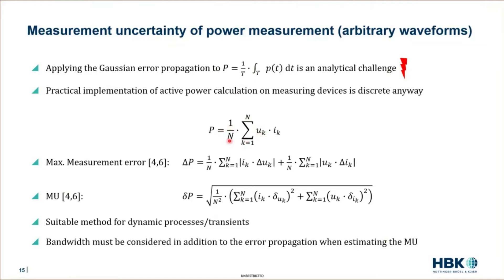Of course, n depends on the ratio of sample frequency to fundamental frequency if we link the averaging to the fundamental cycle. But it can also be a timed average. So this is not restricted in this formula. It's only a mean value. And for this, we can again easily apply the Gaussian error propagation, which leads to this formula. And this one is now again a suitable method to estimate or calculate measurement uncertainty of active power for arbitrary waveforms.